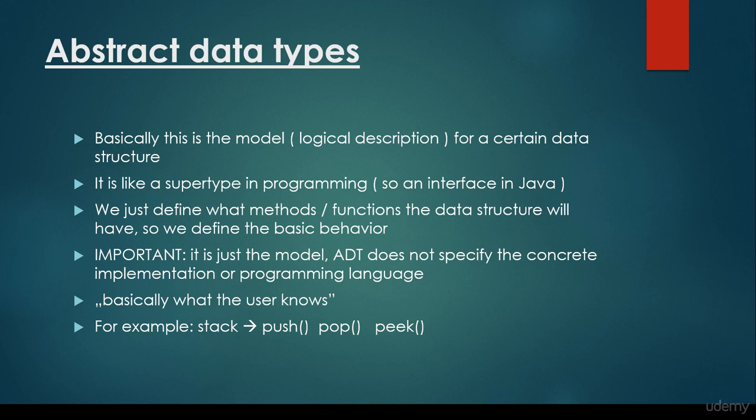But we know nothing about the concrete implementation — how we are going to store the items in the data structure, or how we are going to implement the push method. We just know that push, pop, and peek methods are needed. And basically this is why abstract data types came to be, because they define these behaviors.